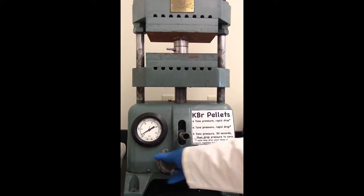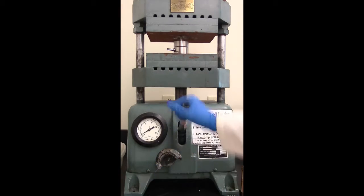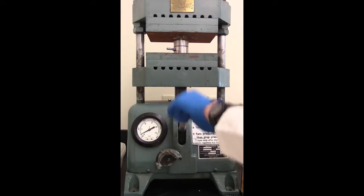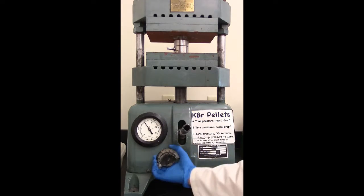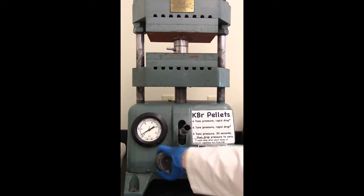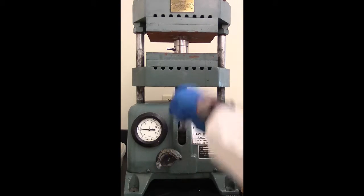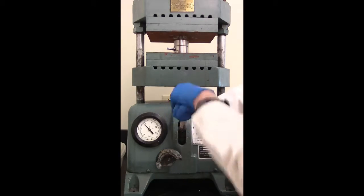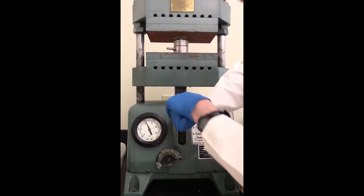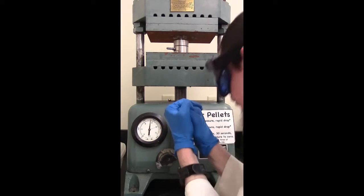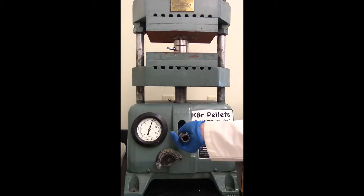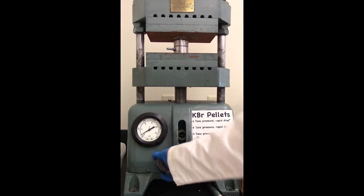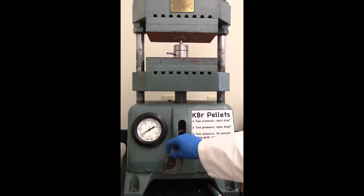In order to drop it, we just turn this knob here. And that'll drop this whole assembly down. Okay, get four tons of pressure, drop. Now to six tons of pressure. Rapid drop to zero. Now to nine tons. Wait for 30 seconds. All right, it's been about 30 seconds. Now we are ready to relieve the pressure and drop this down a bit.